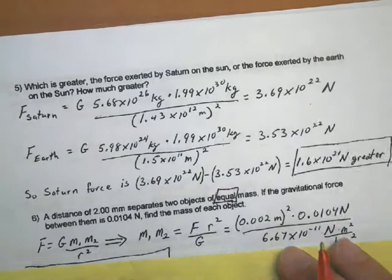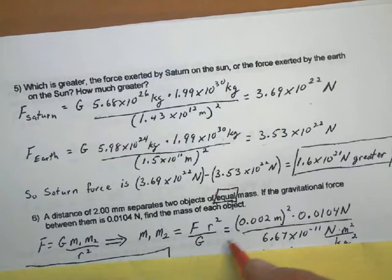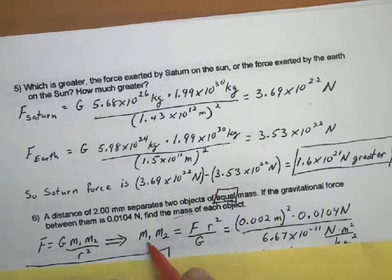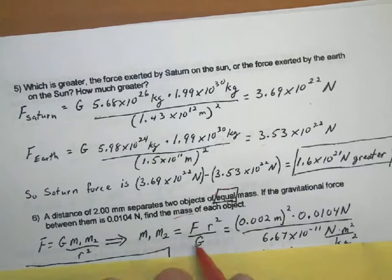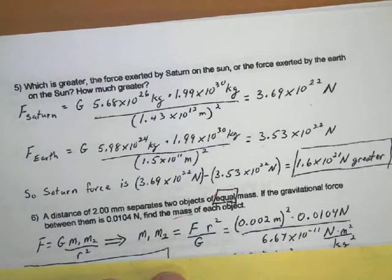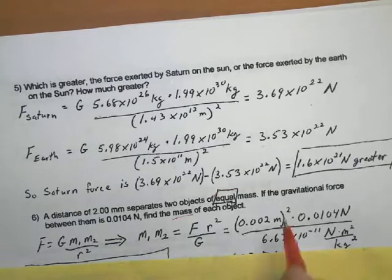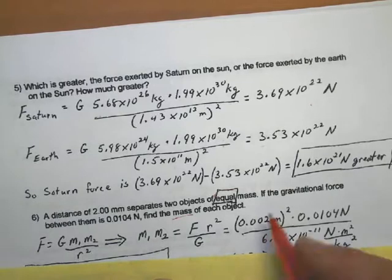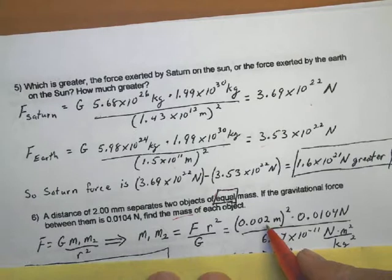So we want to find each object, so we're solving for m1 and m2, which would be equal to the force times the r squared divided by the gravitational constant. Now we were given the distance in millimeters, so you have to convert that to meters to be consistent with the units inside of G. So that's 0.002 meters.